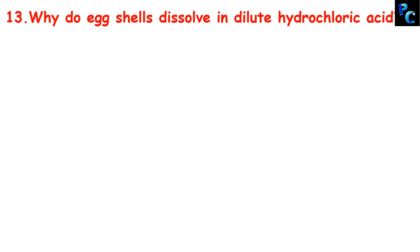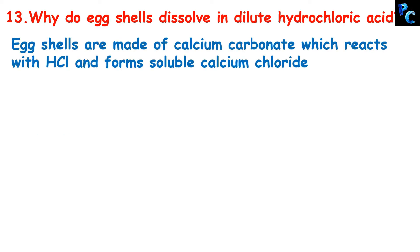Why do eggshells dissolve in dilute hydrochloric acid? Eggshells are made of calcium carbonate, which reacts with hydrochloric acid and forms soluble calcium chloride, and as a result of which it dissolves.